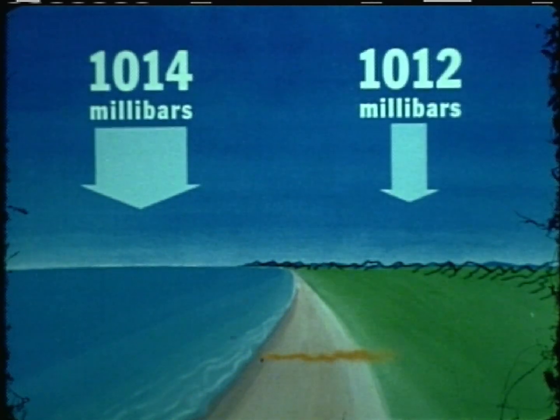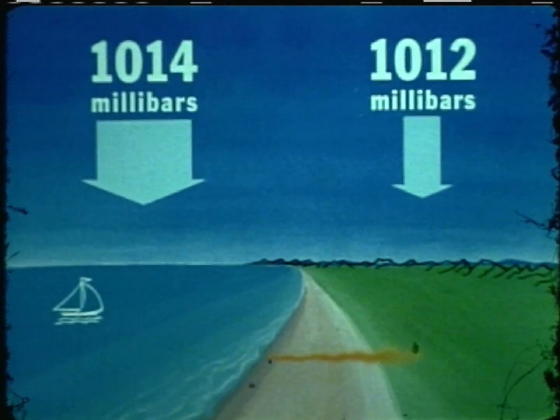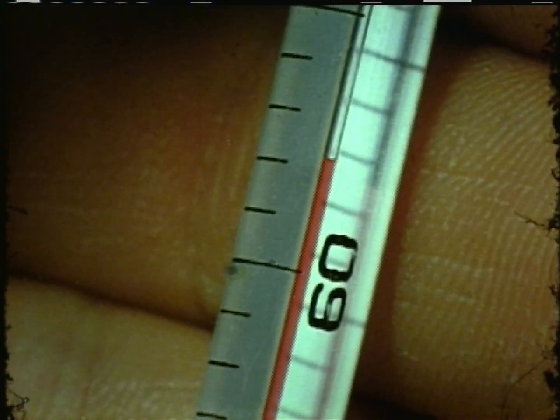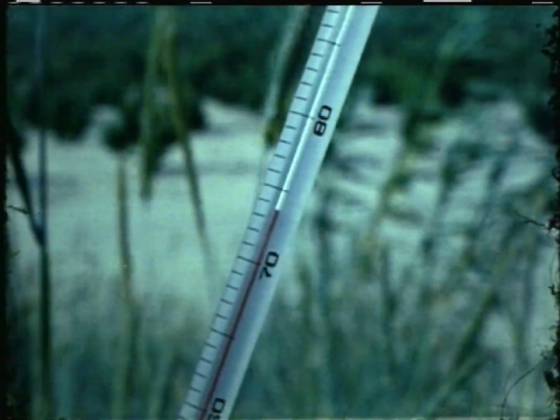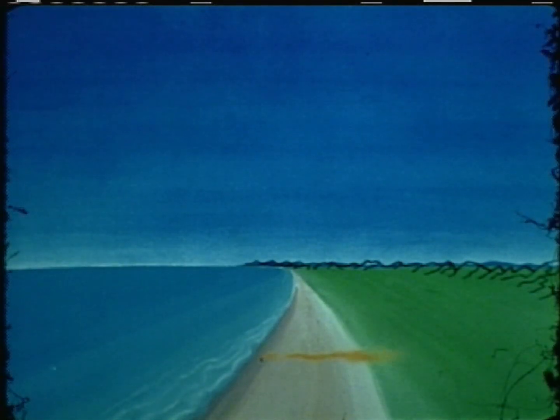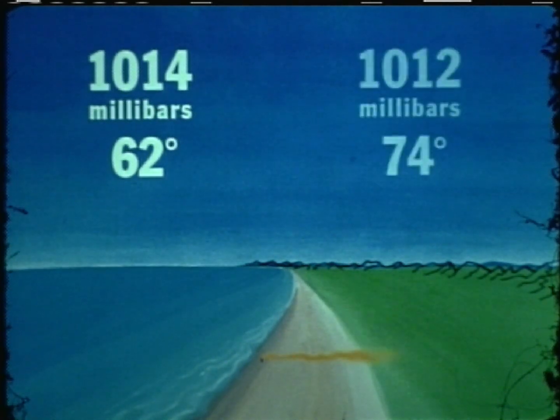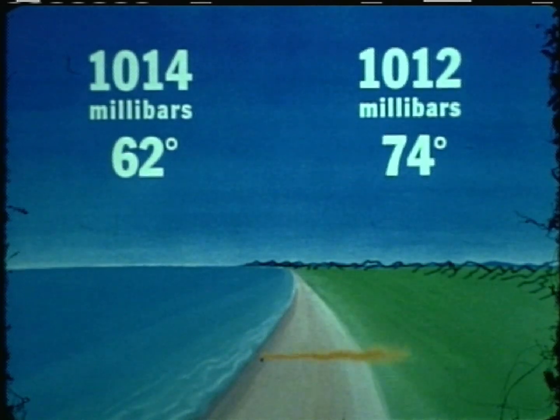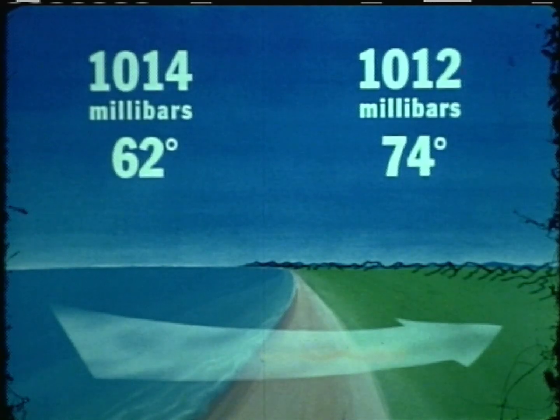Earlier we saw a difference in air pressure between the water and the land. We should also find a difference in air temperature. On the ocean, the air temperature is 62 degrees; inland, it is 74 degrees. The same thing is happening here as in our lab experiment. Cooler, heavier air over the ocean is sinking, its pressure rising. Meanwhile, warmer, lighter air over the land is rising and its pressure is falling. The wind is blowing from an area of higher pressure to an area of lower pressure. You probably know from time at the beach that during the day the wind usually blows in from the water toward the land.